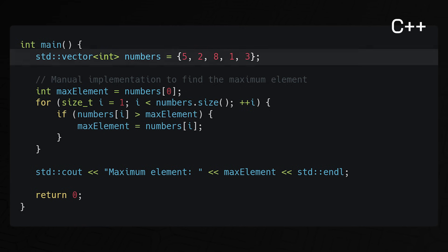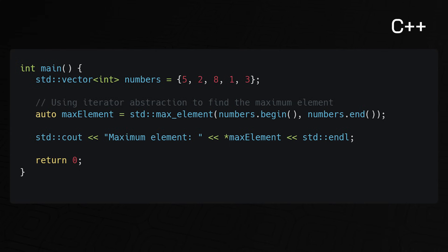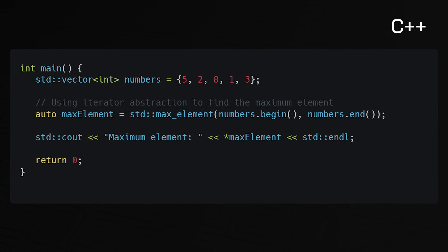In this C++ example, we create a vector of integers and use a for loop to find the greatest element. This requires loop initialization, condition checking, and element comparison, making it less readable and error-prone. By using the iterator abstraction, the code becomes a lot simpler — we just call the maxElement function, which encapsulates iteration and comparison logic, making the code cleaner and more concise without sacrificing performance.